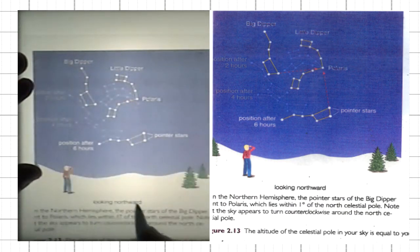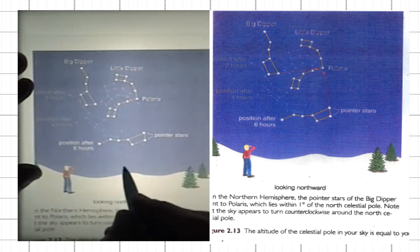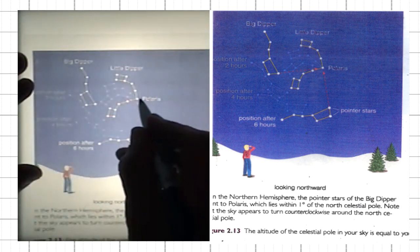Here is again the northern horizon. Here is Polaris, or North Celestial Pole.